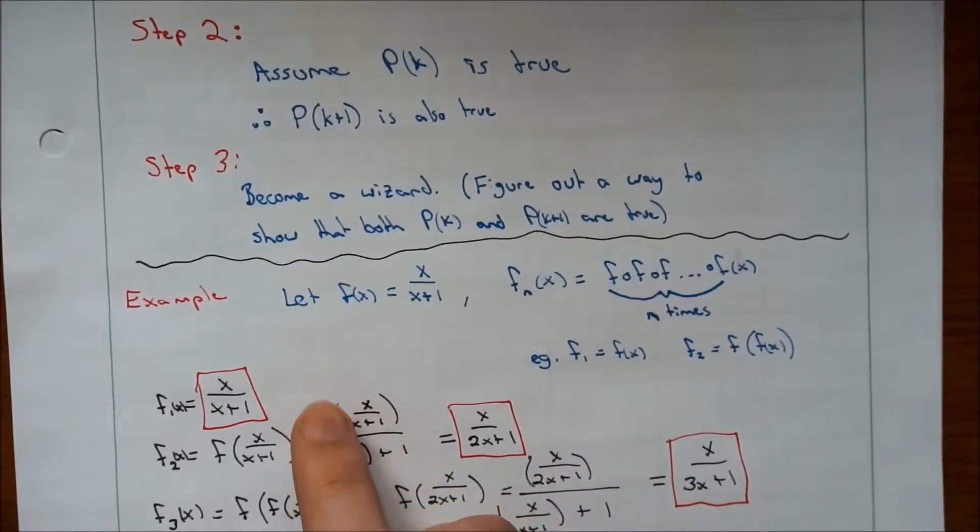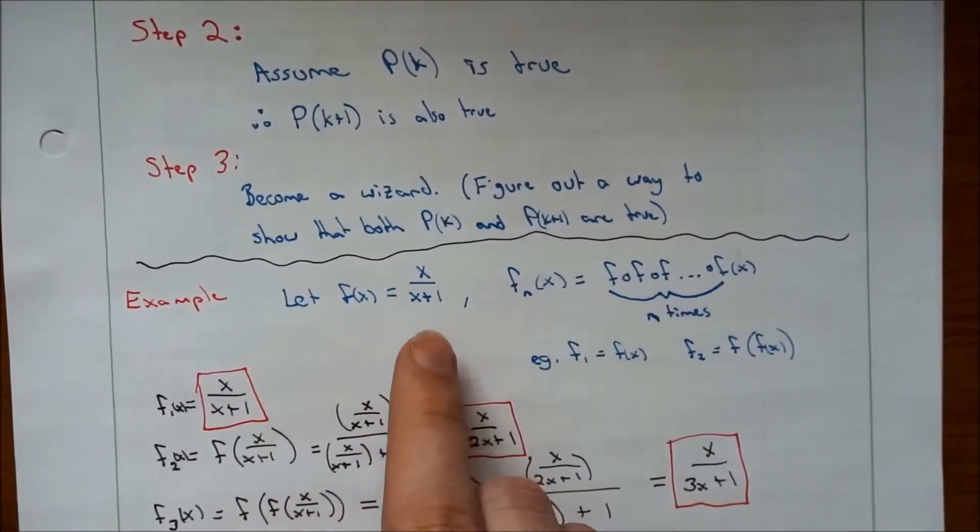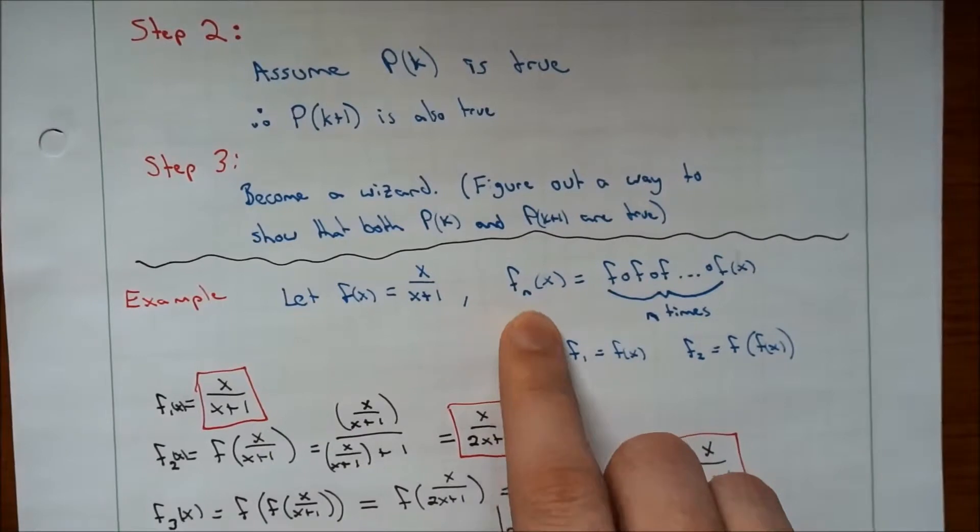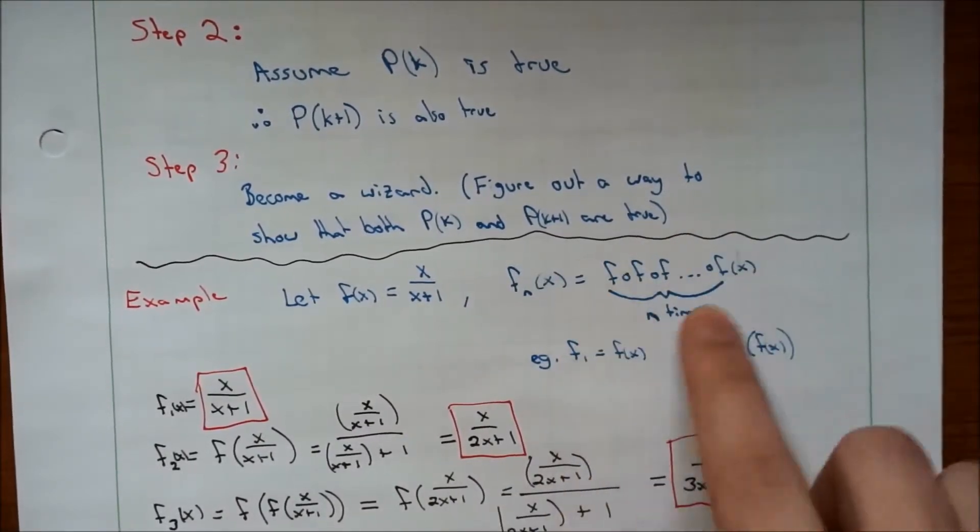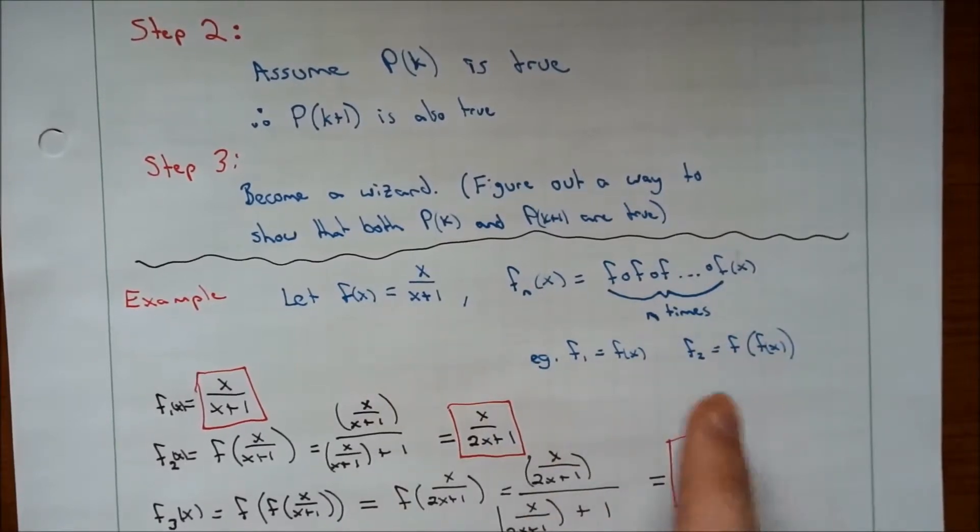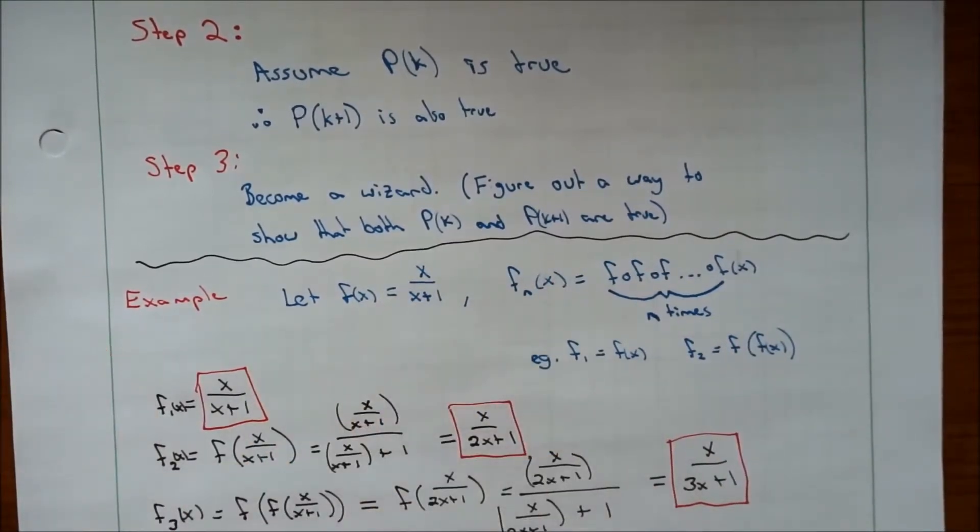So we need a pattern. What we're looking for here is some statement that will say f_n(x) equals some function of n that will tell you what this mess is without having to actually go through and plug this into itself a dozen times.